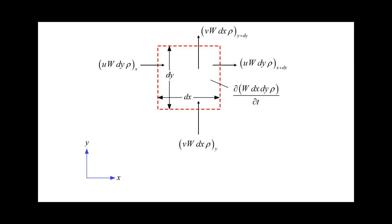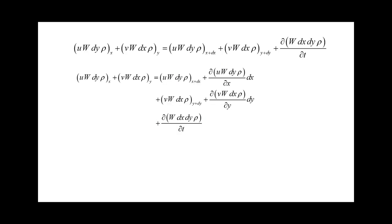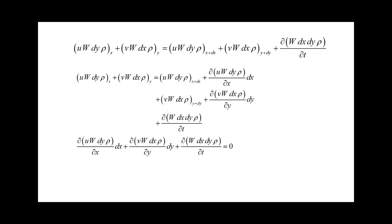We have our ins and outs, and the rate of storage of mass — the time rate of change of mass in the control volume — equals the volume (w·dx·dy) multiplied by density. We place each term in the mass balance: ins equal outs at x+dx and y+dy, plus the rate of storage. We then expand the x+dx and y+dy terms in terms of their derivatives, cancel terms appearing on both sides, divide by w·dx·dy, and end up with the continuity equation.